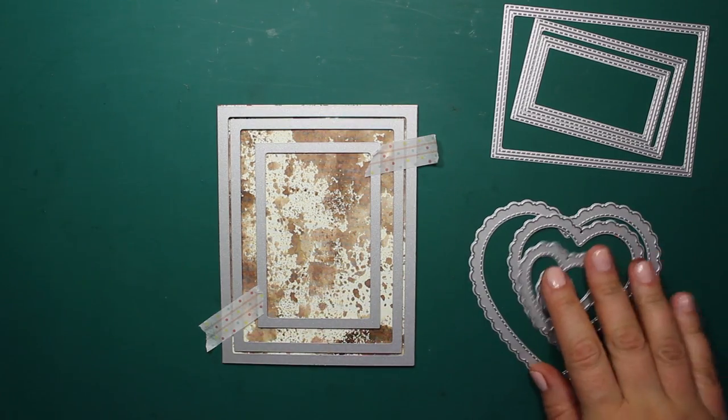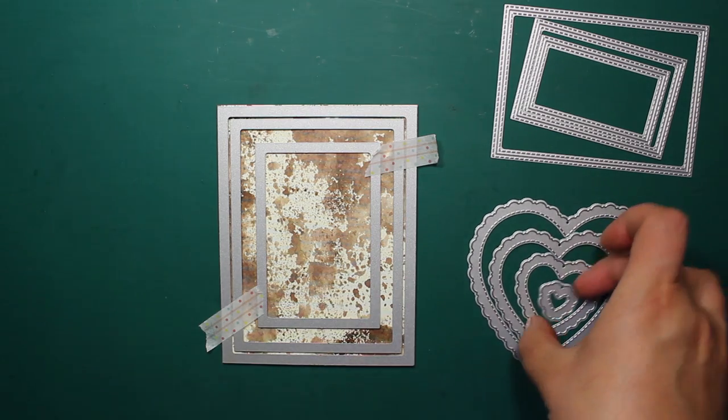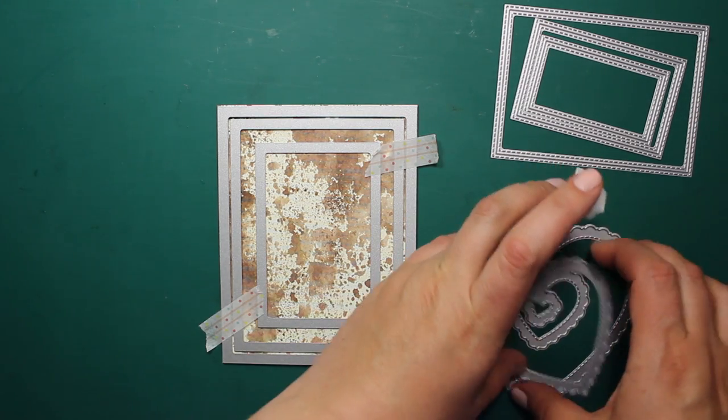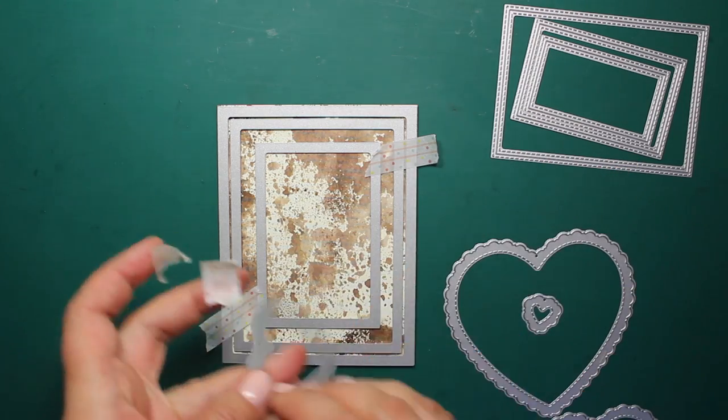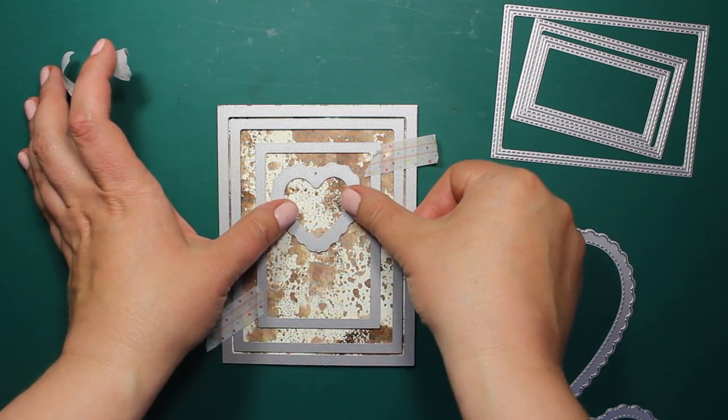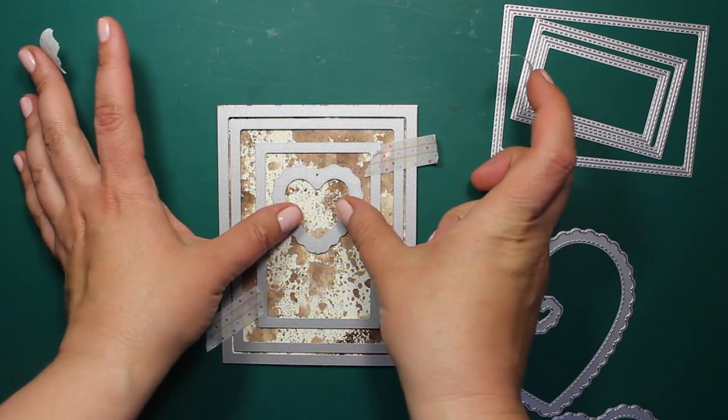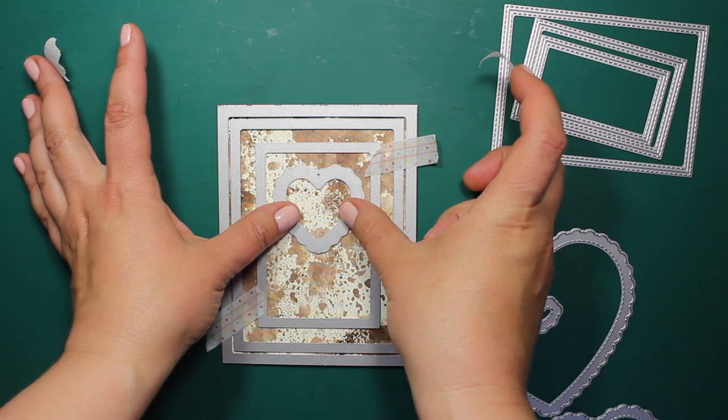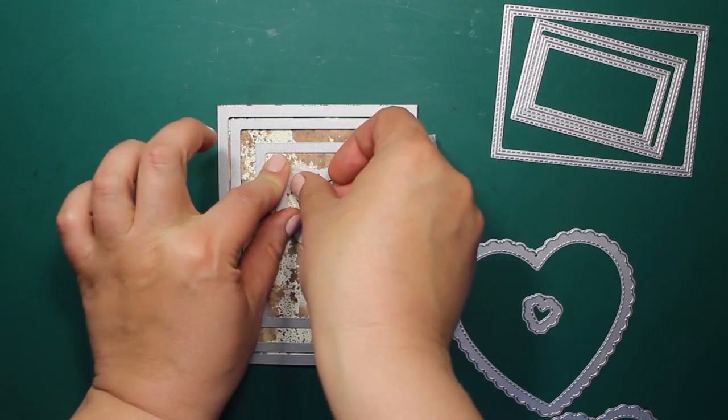Another set I'm going to use is stitched fancy scalloped hearts, also by Cat Scrappiness. I'm positioning one of the hearts inside the rectangular frame and taping it down. Then I'm going to run it all through the die cutting machine.